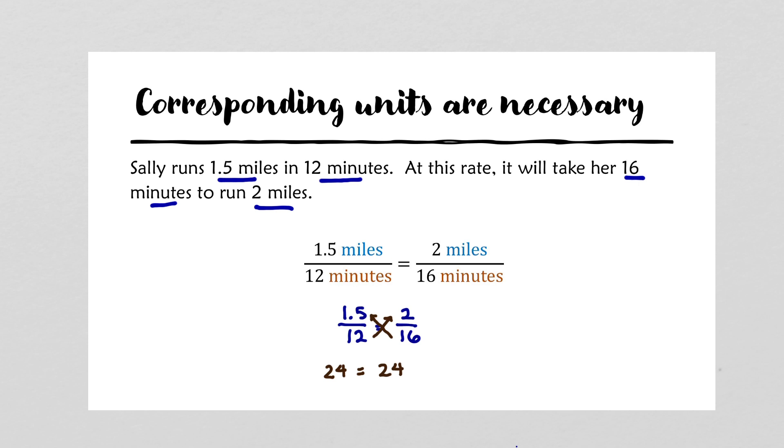24 is 24, and cross multiplication verifies that this is, in fact, a proportion. This ends our video, Introduction to Proportions. In our next video, we're actually going to put them to use in solving some application problems.